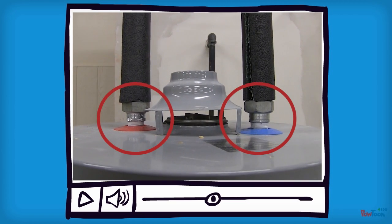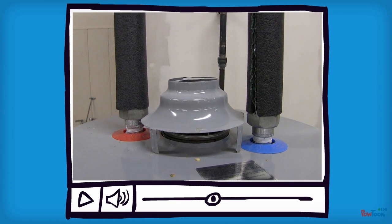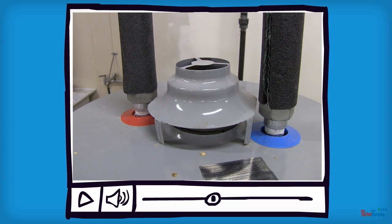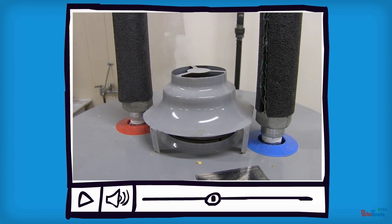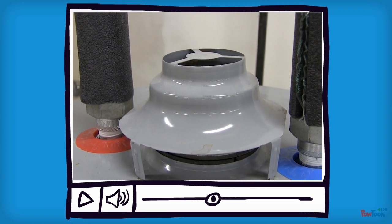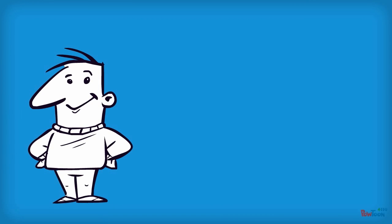So it's very important that you install a dielectric union, and they're sold at just about any place—Lowe's, Home Depot, whatever hardware store—they will have them. And they're very important. They're expensive, but they're very important.